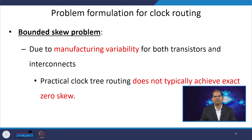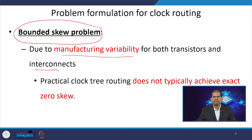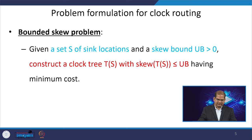A connection topology G is also given. Now we will discuss the bounded skew problem. Due to manufacturing variation or process variation, both transistors and interconnects will have variation in their behavior. This variation translates to variation in delay in the interconnects and the delay of the logic gates. In actual cases it is not possible to get zero clock skew, so there should be some bound on the clock skew. In practice, clock tree routing does not typically achieve exact zero skew, but has a range of skew.